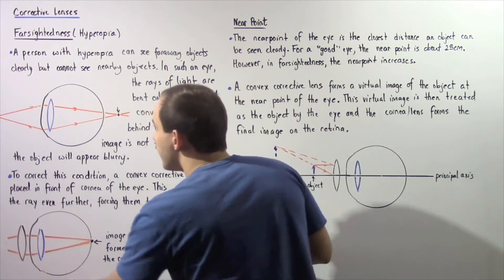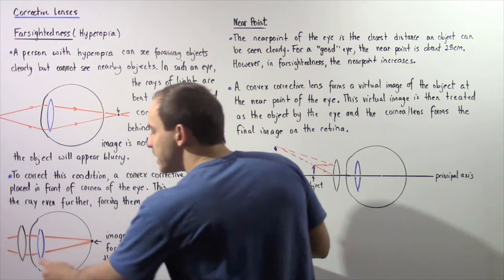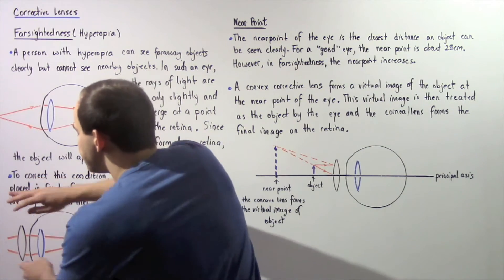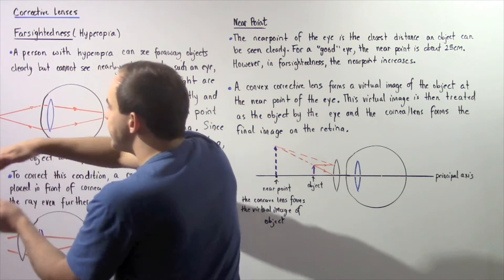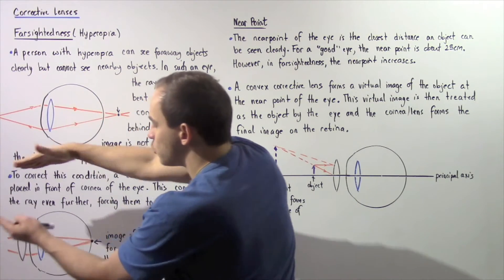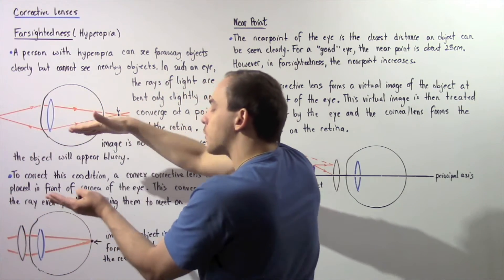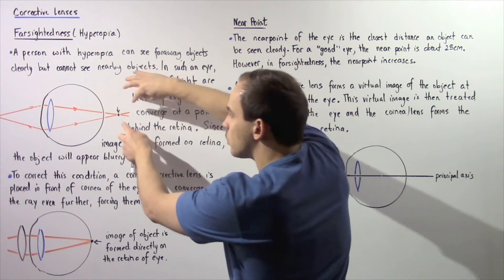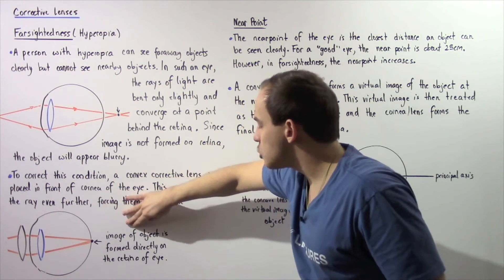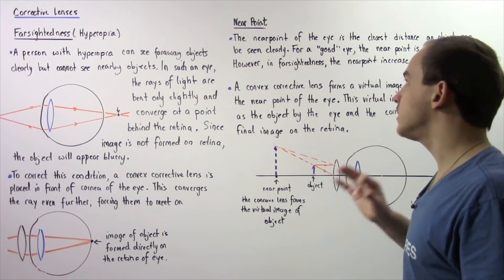Looking at the diagram, we have the eye with hyperopia, the lens of the eye, and the cornea. The convex or converging corrective lens is placed in front of the cornea. When rays of light from a nearby object reach this lens, they begin to converge. Those converged rays then reach the cornea and are converged even more, bringing the point of convergence from behind the retina to the retina itself, so the image appears clear.